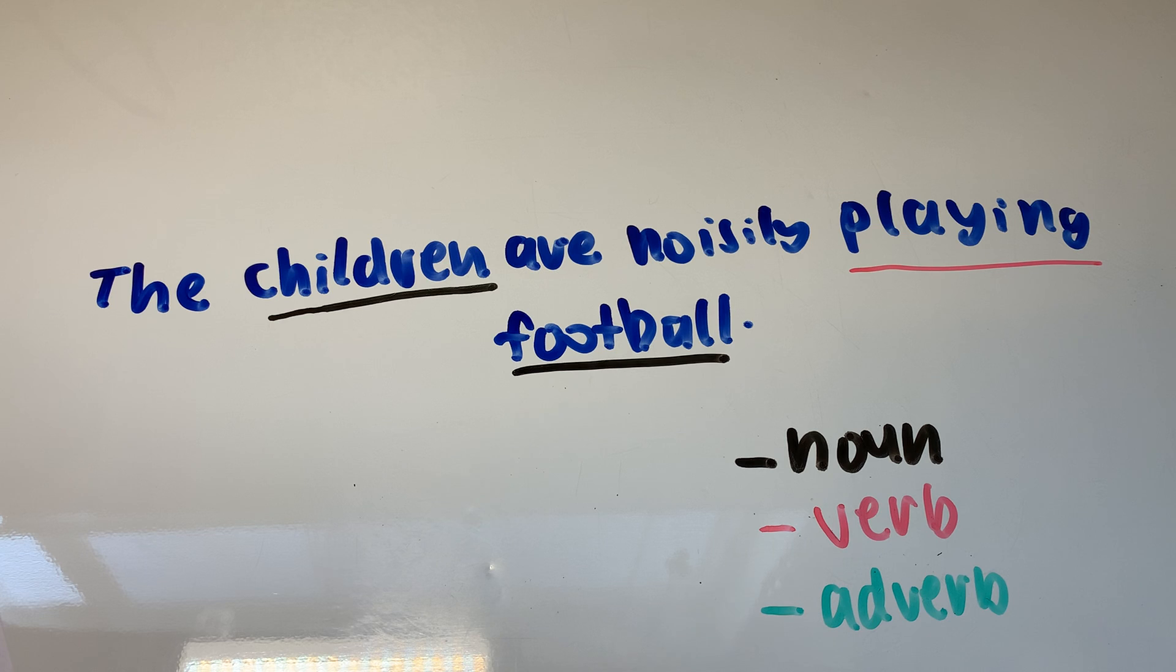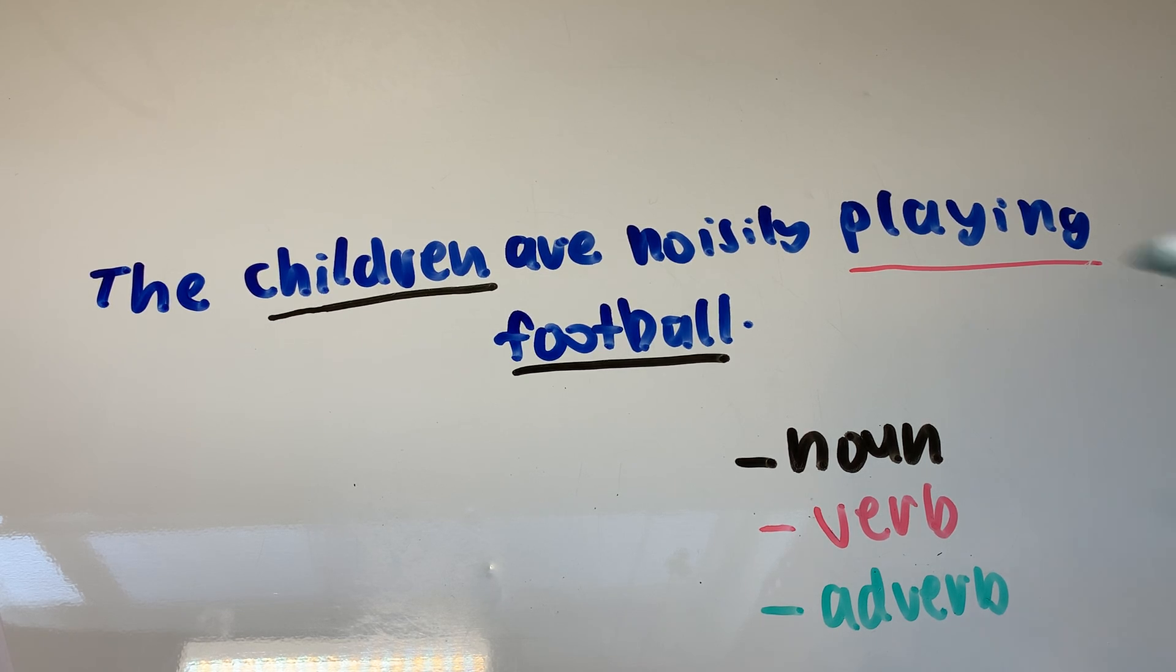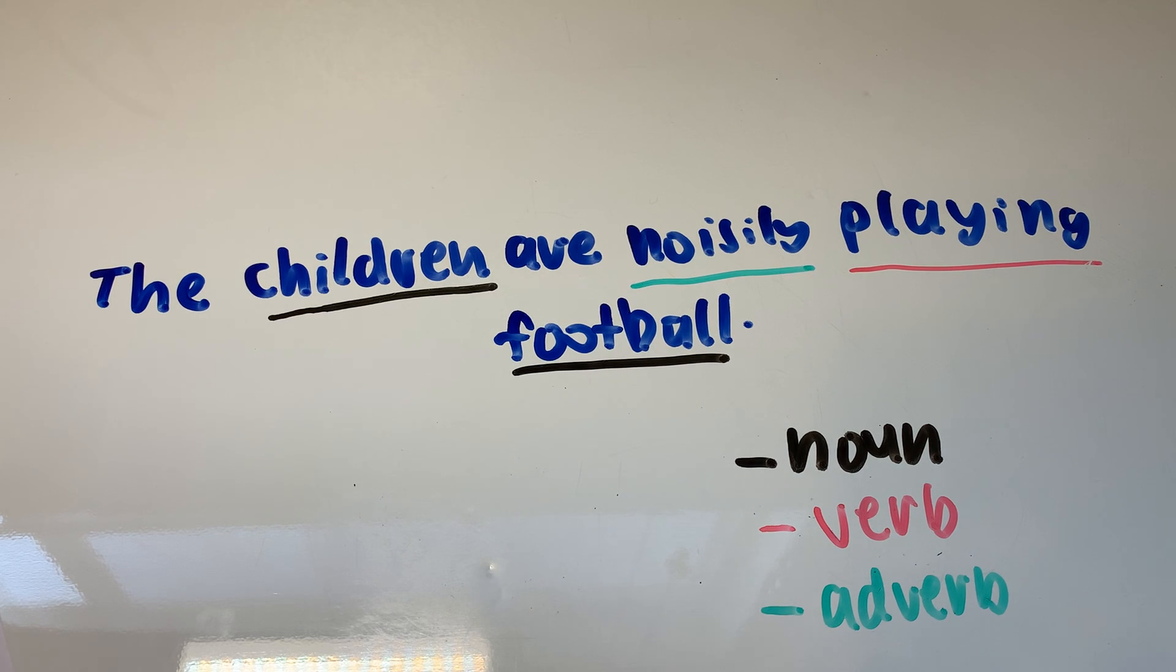And finally, the adverb describes a verb. It describes how they're doing something, like how they're playing football. How are they playing football? Or it describes in detail how they're doing the verb or how they're doing the action. So in this case, what describes playing? How are they playing? They're noisily playing. And that's the adverb because it describes how they're playing. It says they're noisily playing, which means it's describing the playing. And so those are all of our parts of speech.